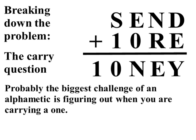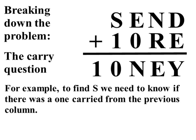For example, to find S, we need to know if there's a 1 carried from the previous column. See, a little green arrow at the top, our way of showing that 1 was carried.